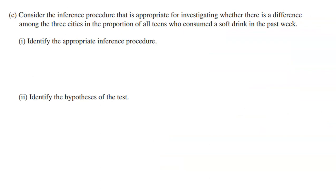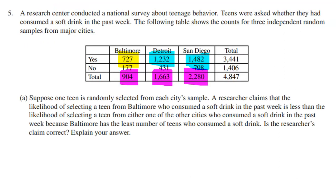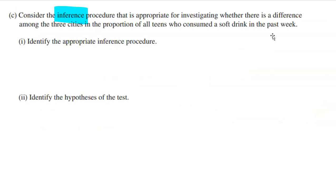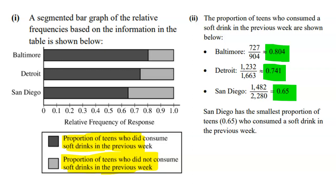The final part asks us to consider the inference procedure appropriate for investigating whether there is a difference among the three cities in the proportion of all teens who consumed a soft drink in the past week, and to identify the appropriate inference procedure and hypotheses. Inference is the idea of utilizing statistics from a sample to make judgments about a population parameter. We're trying to say: what can we learn from these three samples about the population? The question asks whether there is a difference among the three cities in the proportion who consumed a soft drink. In our data there was a difference, but just because you see a difference in samples doesn't mean there's guaranteed to be a difference in the greater populations.